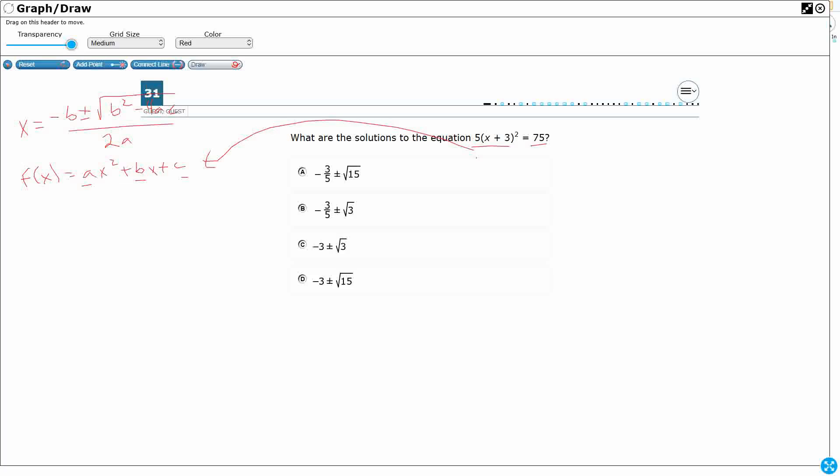Well, let's factor that out. So I've got 5, it's going to be x plus 3, x plus 3 equals 75. So I'm going to use the distributive property to foil this out. So that's going to be x squared plus 3x plus 3x plus 9 equals 75.